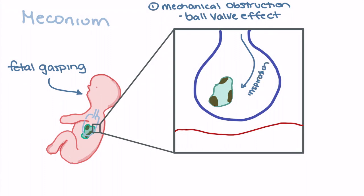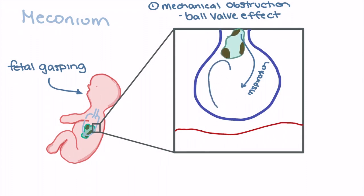However, when the neonate tries to exhale, that piece of meconium can be pushed out into the bronchiole, leading to full obstruction of the alveoli and trapping of air. As this process continues, it puts the alveoli at risk of hyperinflation as no air can exit on expiration.